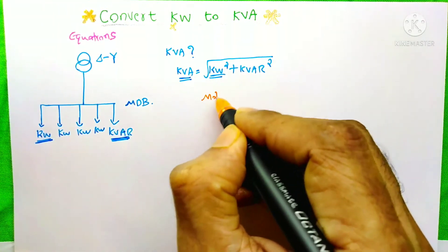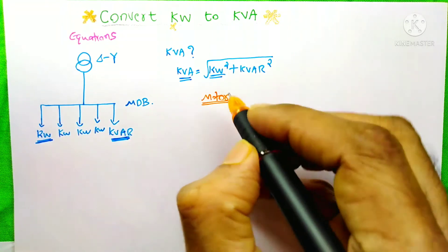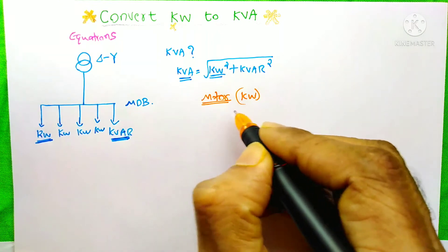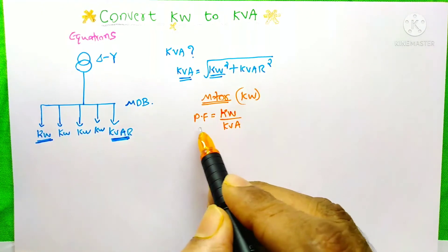Suppose I have a motor, whatever single phase or three phase motor. We already know that the motor's power is in kW. If somebody asks you how to convert this kW to kVA, then you need to use this equation.